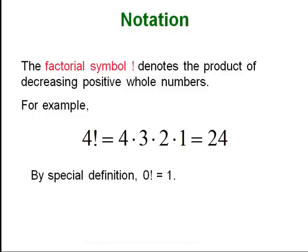The factorial symbol — the exclamation point — does not mean that it is an excited 4. It means 4 times 3 times 2 times 1. Basically, factorial means the number times every integer value smaller than it down to 1.